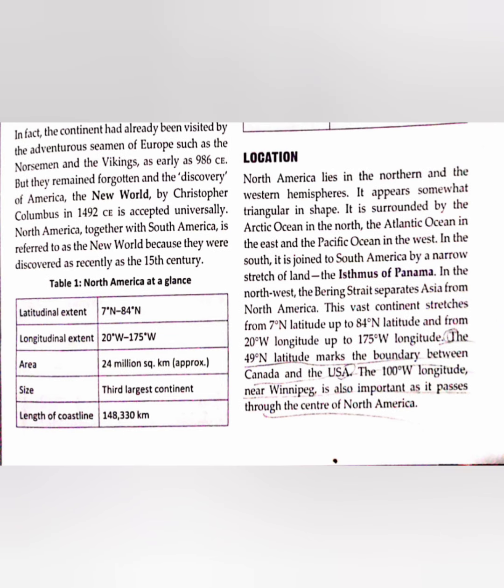An isthmus is a narrow stretch of land — in this case, the Isthmus of Panama — which joins North America and South America. In the northwest, the Bering Strait separates Asia from North America.